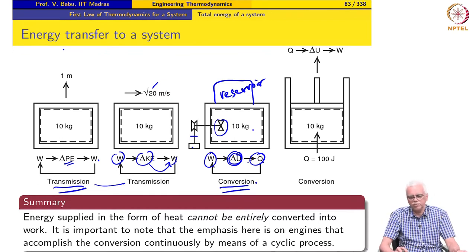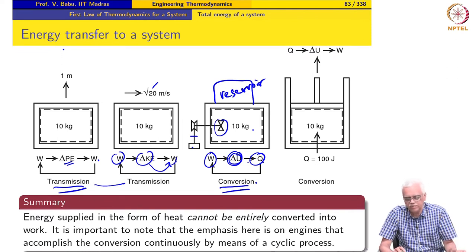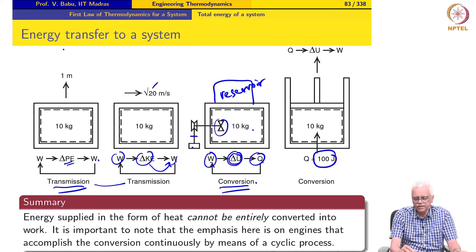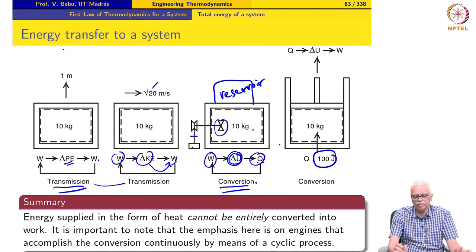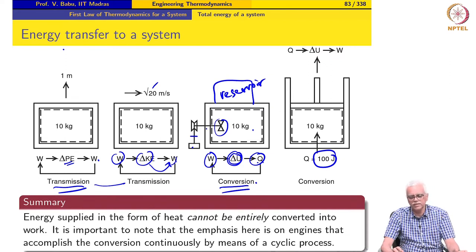In principle, all the work can be converted to heat. There is nothing in the laws of thermodynamics that prohibits that from happening. The process can be repeated continuously, so conversion of work to heat can be run as a cyclic process. All three examples so far can be run as cyclic processes.